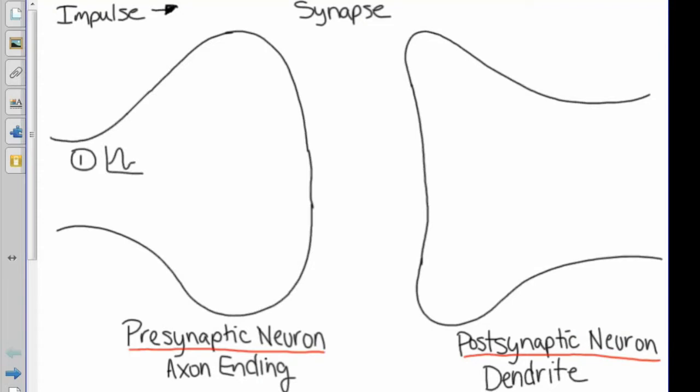The first step is that an action potential hits the presynaptic neuron causing sodium to rush in, so depolarization, and also causing calcium to rush in.